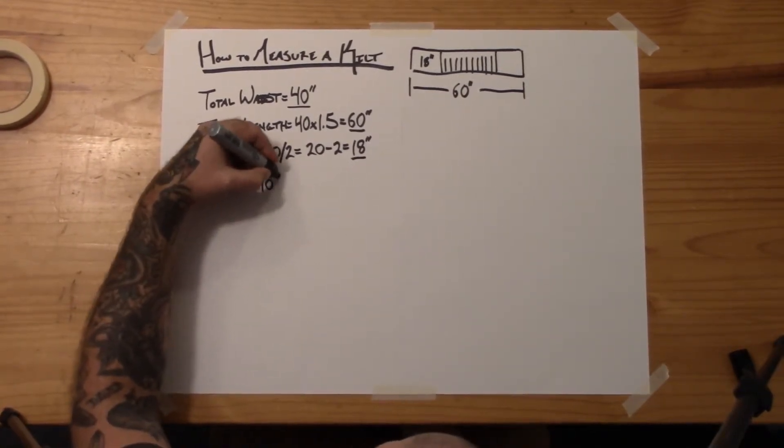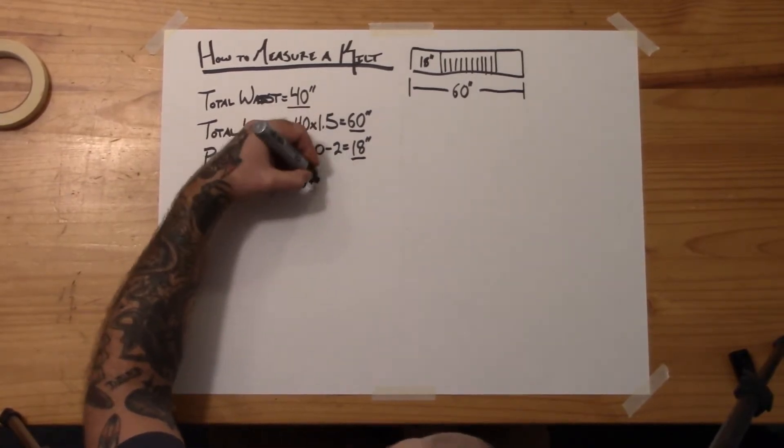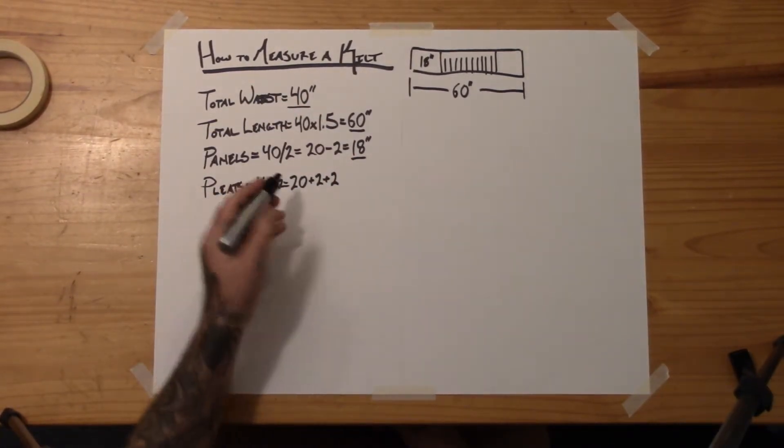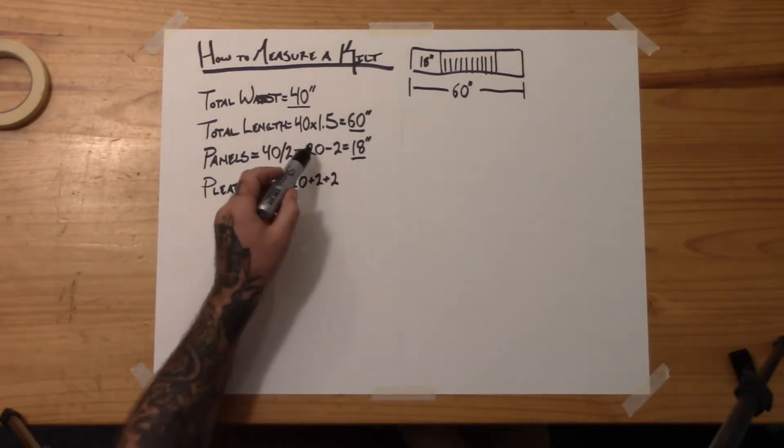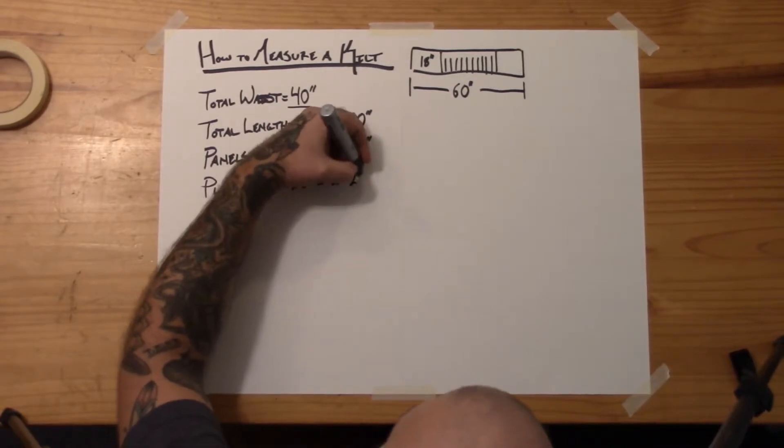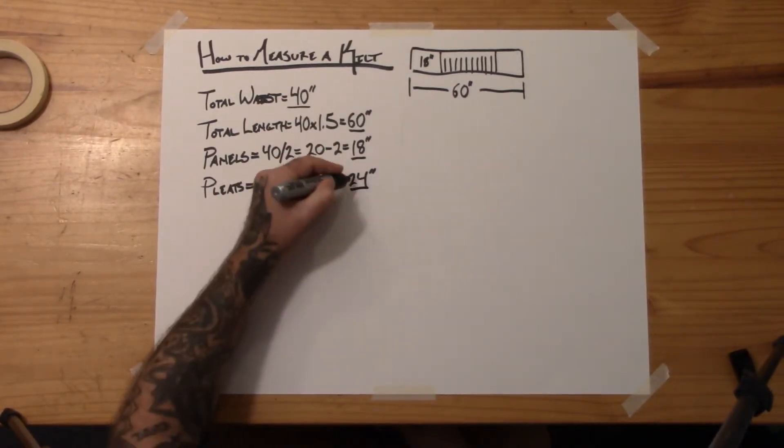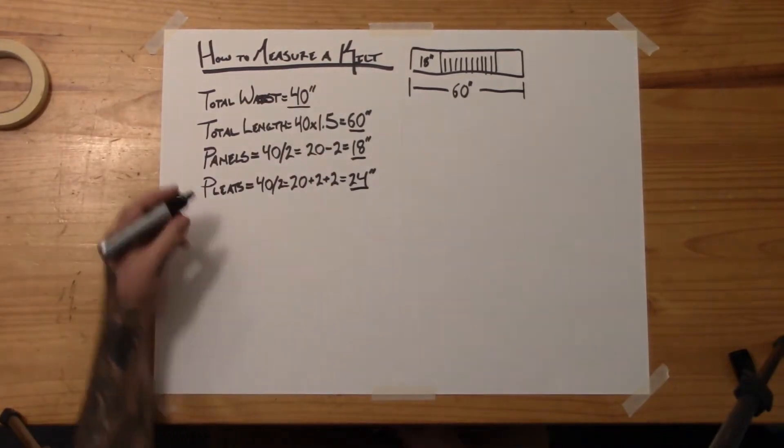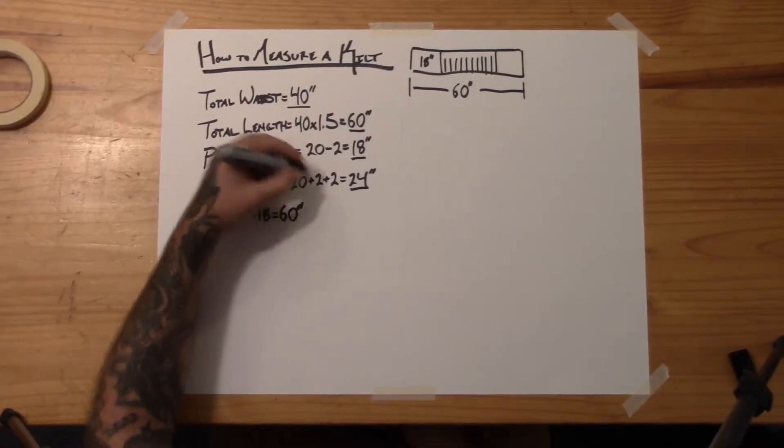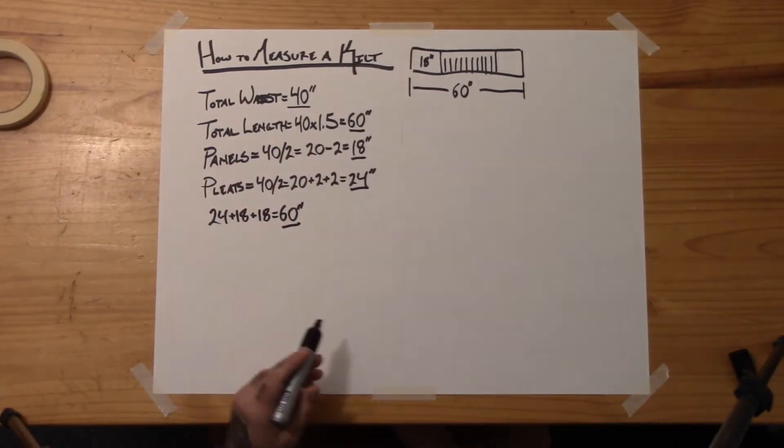Which is another very important thing. So, it's going to be 40 divided by 2 again and that's equaling 20. But now we're going to add 2 inches because we took it from this panel and we're going to add another 2 inches because there's another panel. So, you basically want to take what you subtract from half of your kilt for a panel and add it and then add it again. It doesn't make a ton of sense. But, the cool thing is this number plus this number plus this number equals this number. So, 24 plus 18 plus 18 is 60 inches. So, that's why we wanted to go ahead and have that. We wanted to make sure our homework checked out.